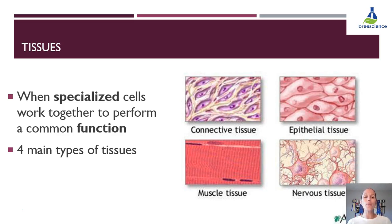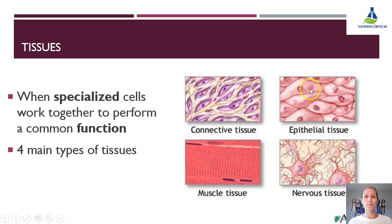The four main types of tissues that we're going to be looking at are connective, epithelial, muscle, and nervous. We'll take a look at each one in detail throughout this lesson.